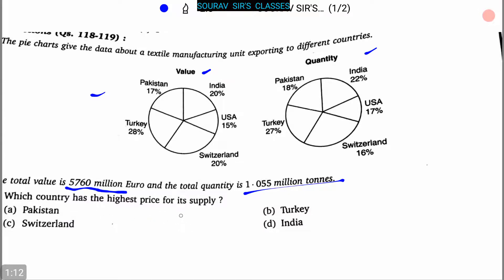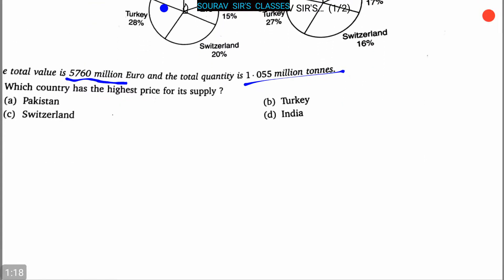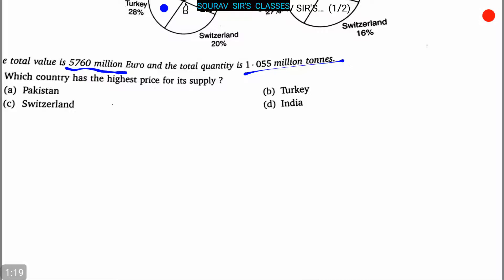Our first question is: which country has the highest price for its supply? Four options are given. Now in solving such questions, we don't require calculating the comparative price for its supply for each option separately.